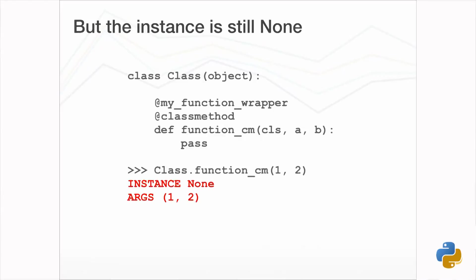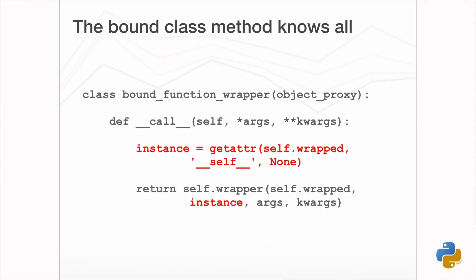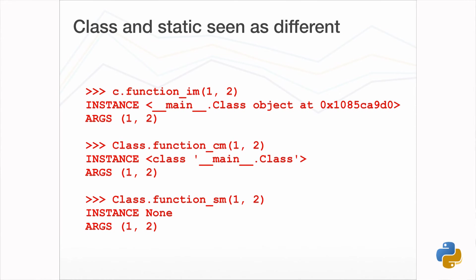We're still not quite there either. The argument list is right again but the instance is still None. For a static method this is reasonable since it isn't much different to a normal function. For a class method it would be nice for the instance to actually be the class type corresponding to the initial class argument. It turns out we can still get this by accessing the __self__ attribute of the bound function, using that instead of what __get__ was passed. Finally, the instance argument for an instance method is the instance of the class, for a class method it is the class itself, and for a normal function the instance is None.